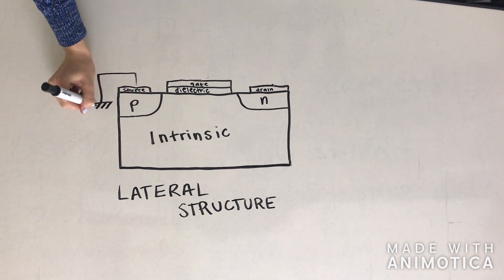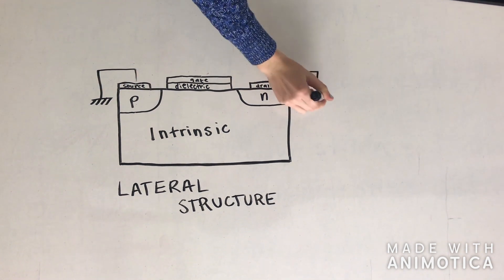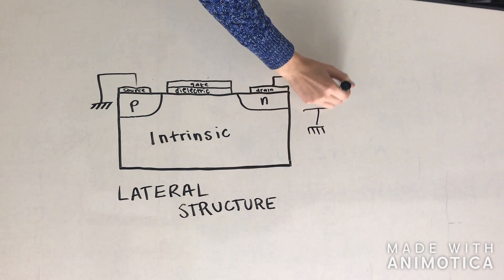T-FETs consist of a gate, a channel, and two junctions. The channel region is depleted by the gate, resulting in a default off condition for the transistor.